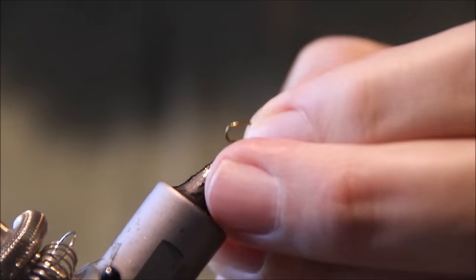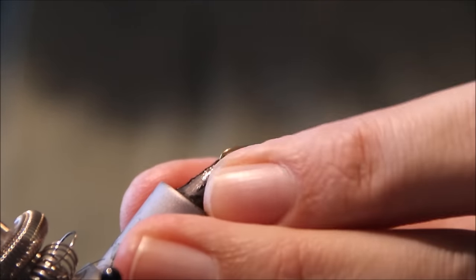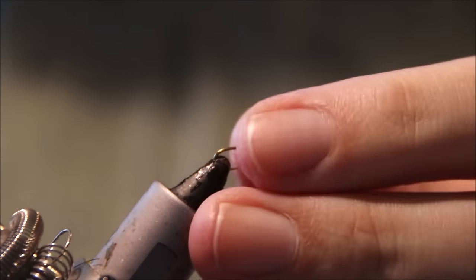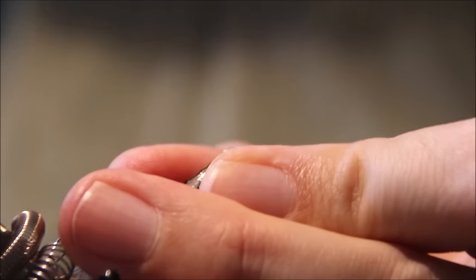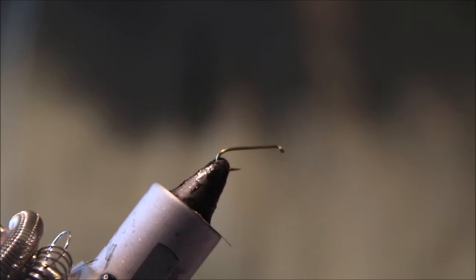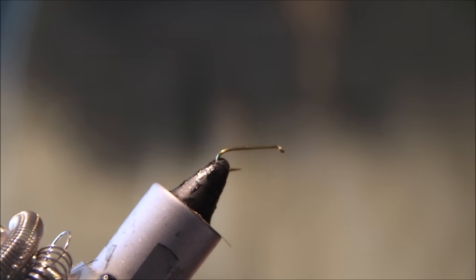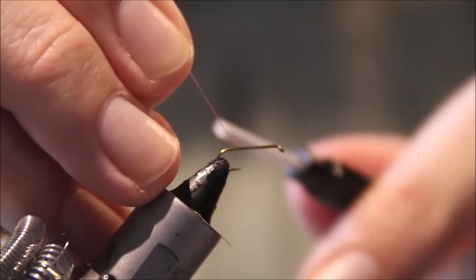So I'll smash the barb and put this size 16 nymph hook in the vise. This is just a TMCO 5262, but you can use whatever hook you like.